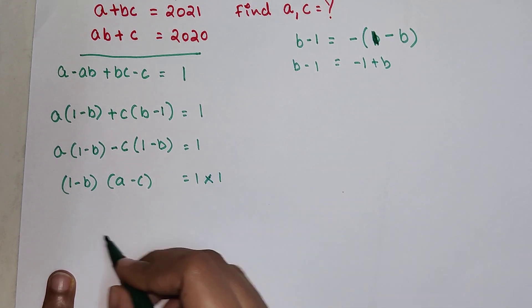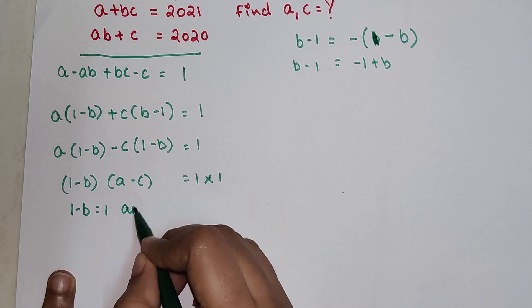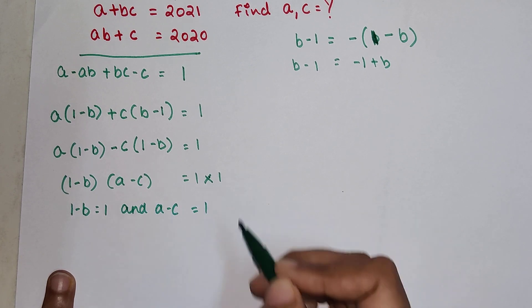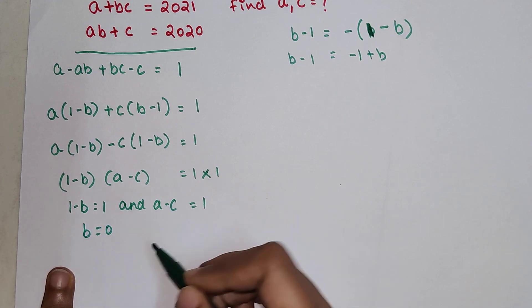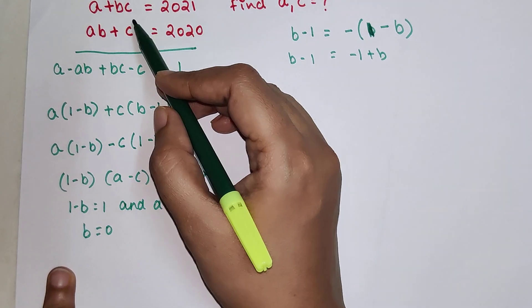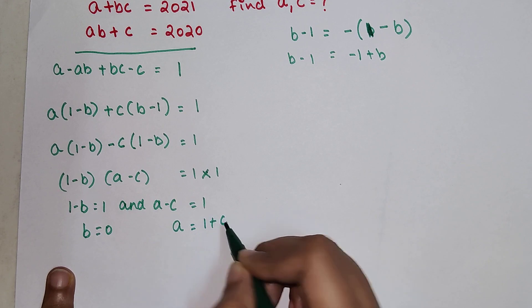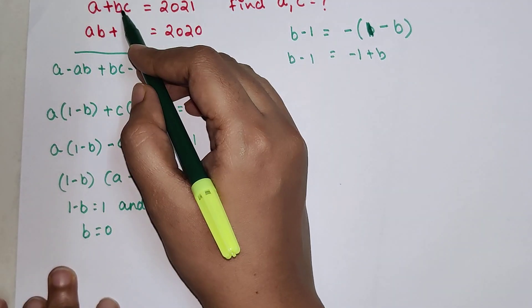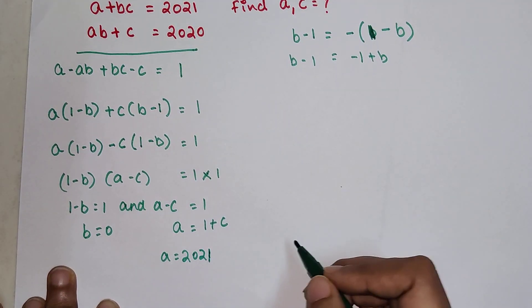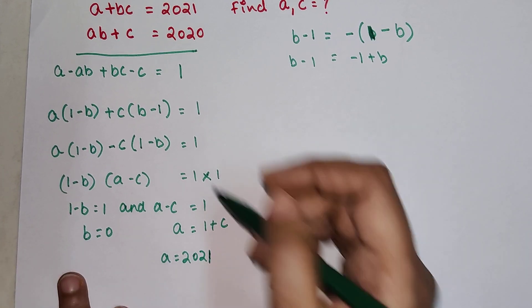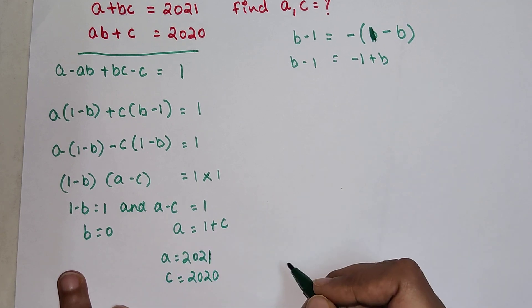1 into 1. So here I can say 1 minus B equals 1 and A minus C equals 1 correct? So here I can say that B equals 0. So if B equals 0 then I can say A equals 1 plus C. Okay so if B equals 0 I can say that A equals 2021 and C equals 2020 correct?